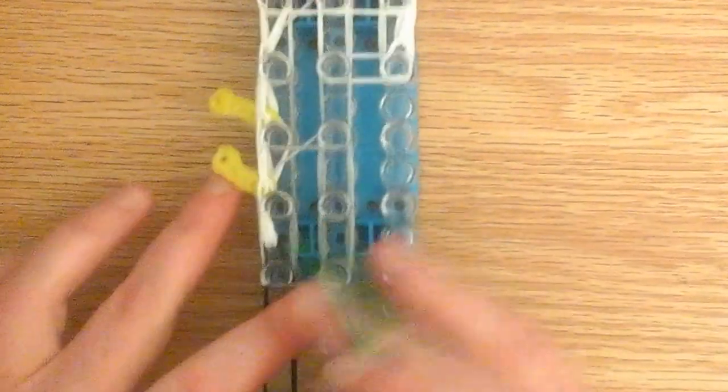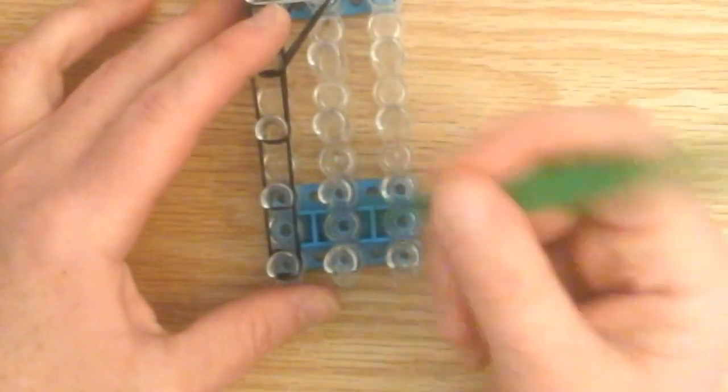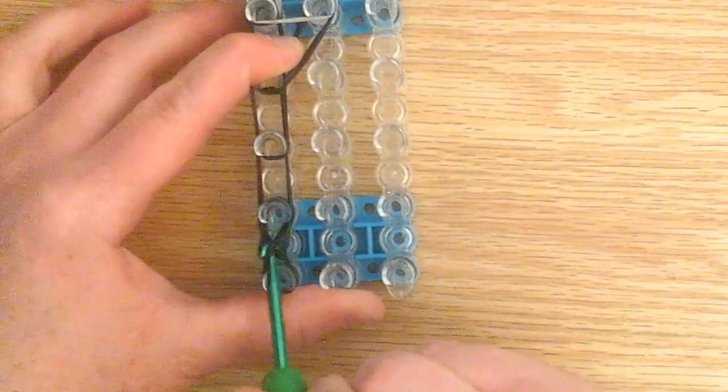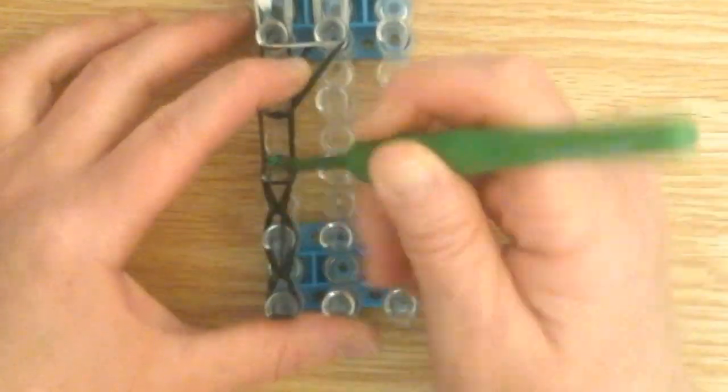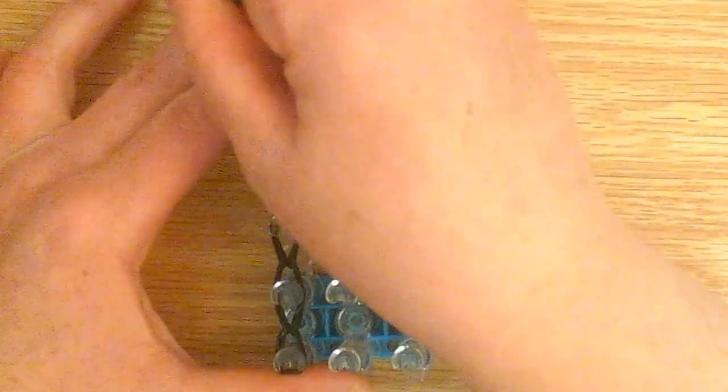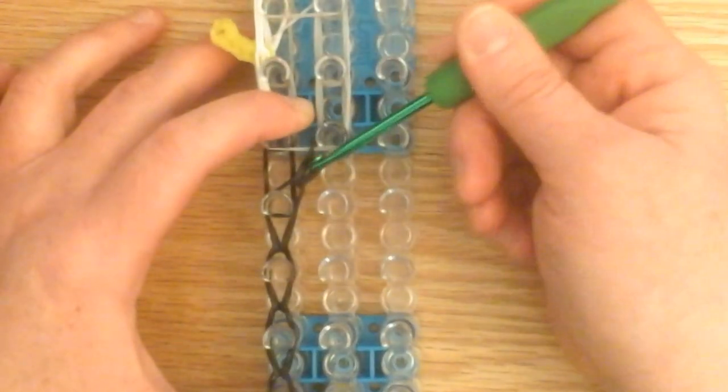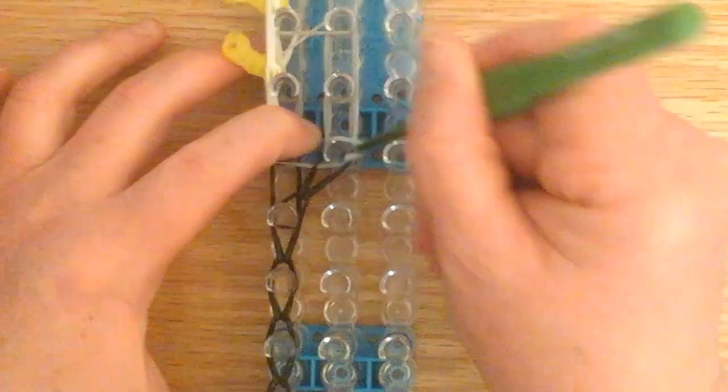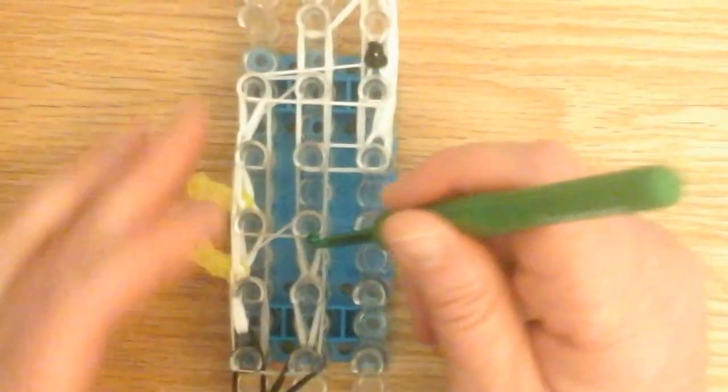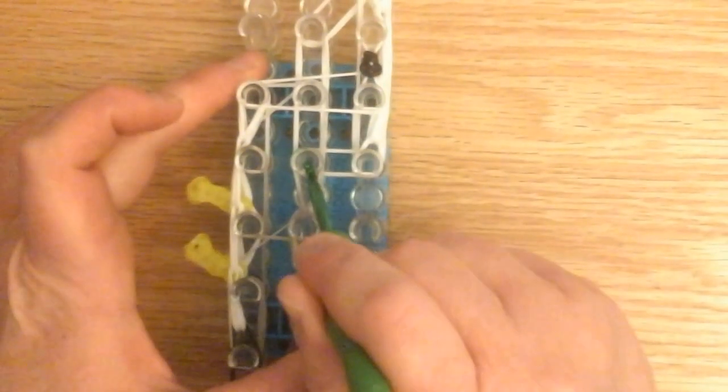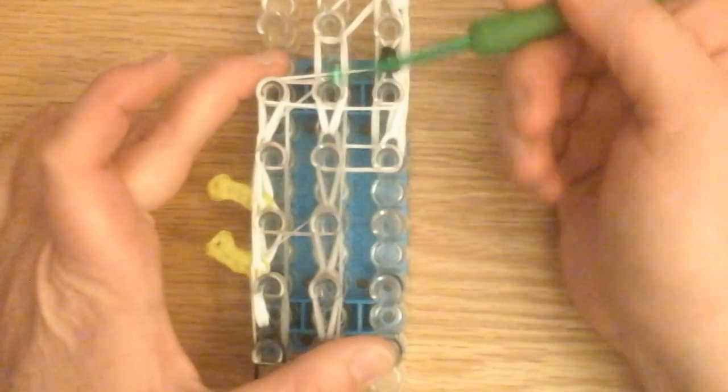Now we can start looping. We'll start with the tail. Now you have this band which is the top. You have this white band on the very top, right here. Don't loop anymore because we're going to connect everything together.